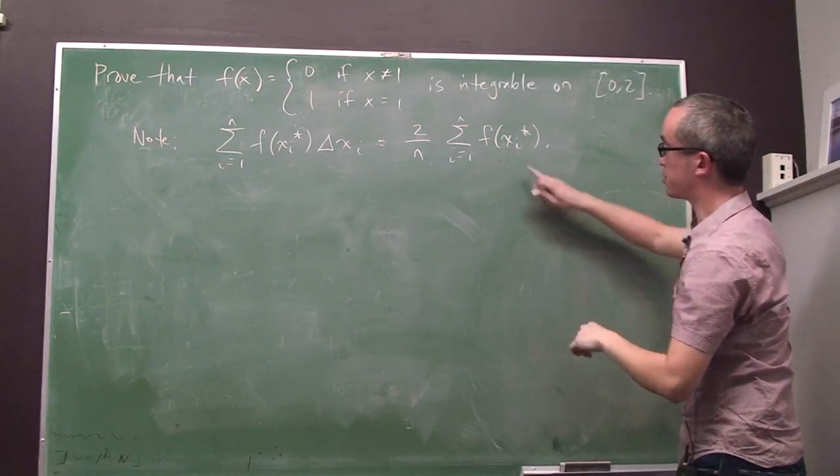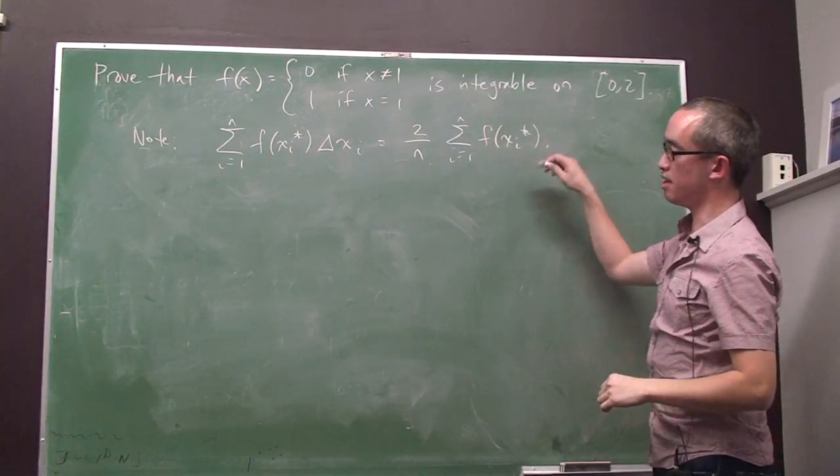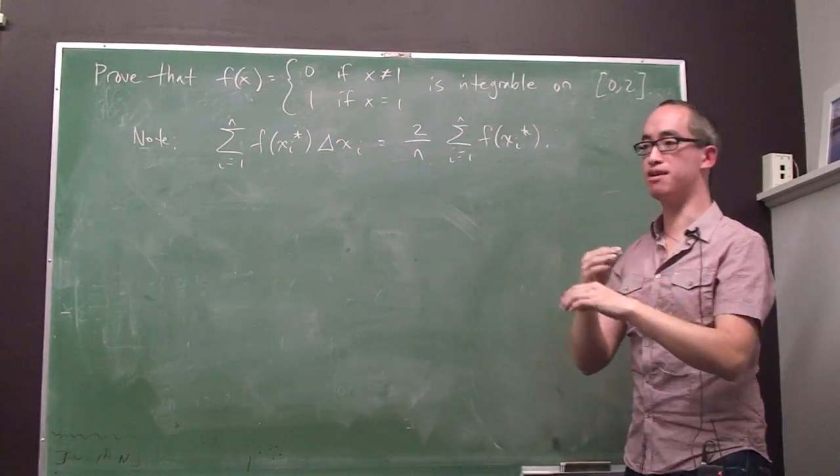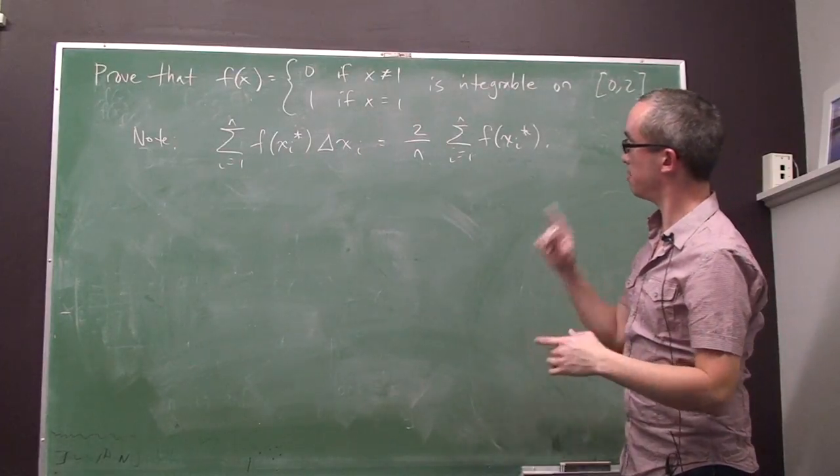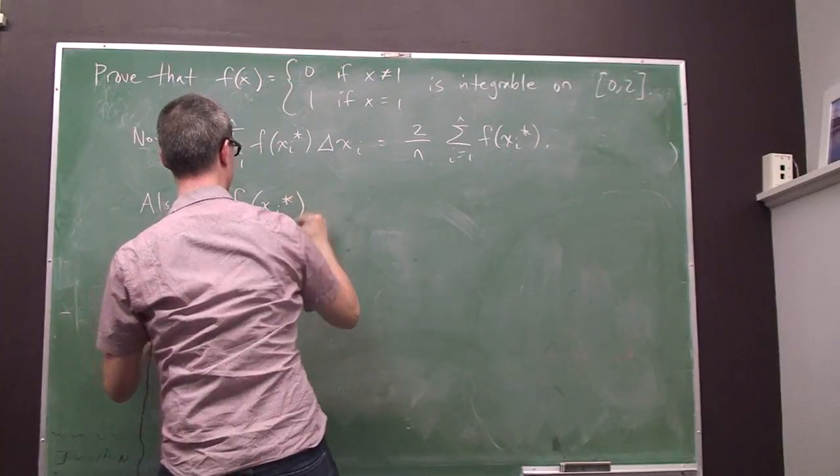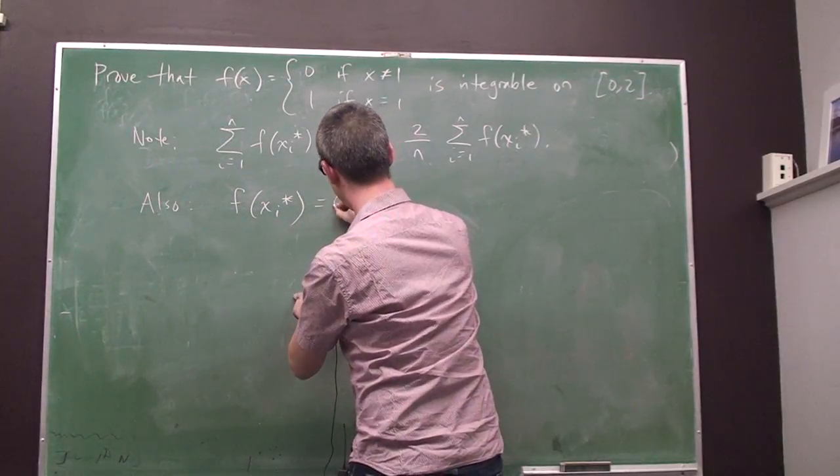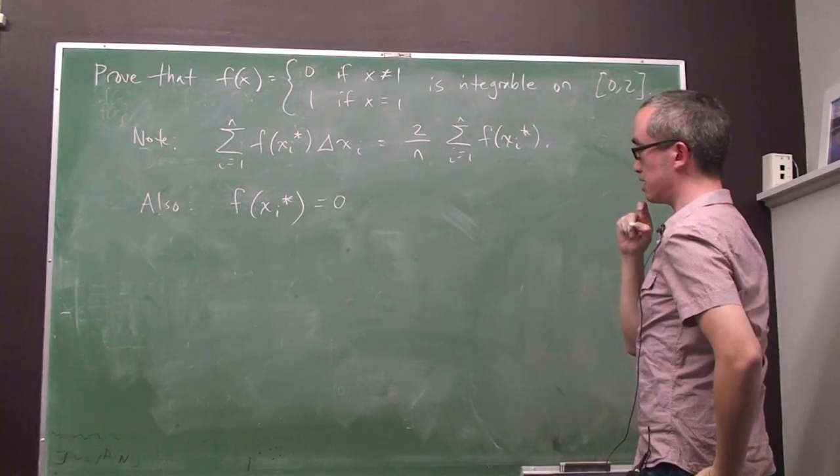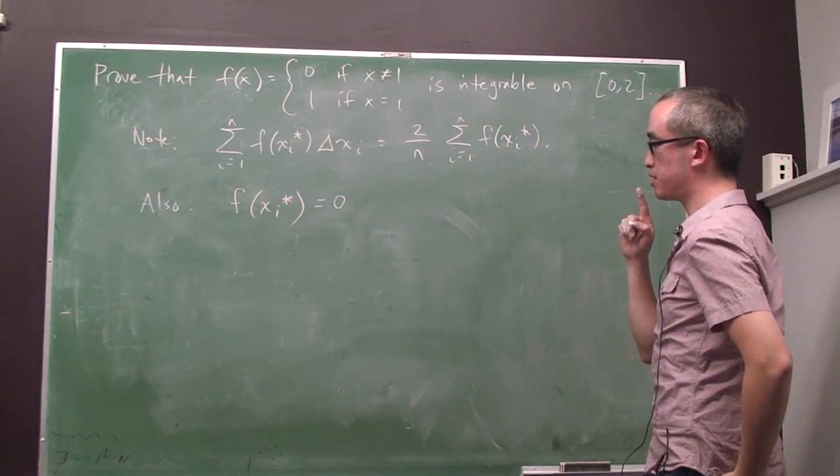Well, as we saw in our picture, this is equal to 0 if the only choices of your sample points are points that are not equal to 1. So, we can in fact say that f of xi star is equal to 0 in all cases except possibly 2.